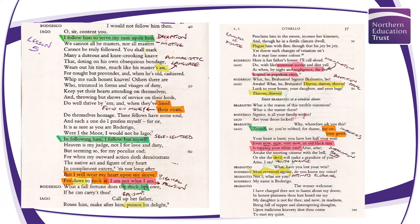'We cannot all be masters, nor all masters cannot be truly followed. You shall mark many a duteous knee-crooking knave that, doting on his own obsequious bondage, wears out his time much like his master's ass.' Again, subtle animalistic language as previously mentioned. He's saying this is his view of people — no one's truly good, everybody's self-serving, out to line their coats. There's a focus on money, which reveals his personal beliefs.